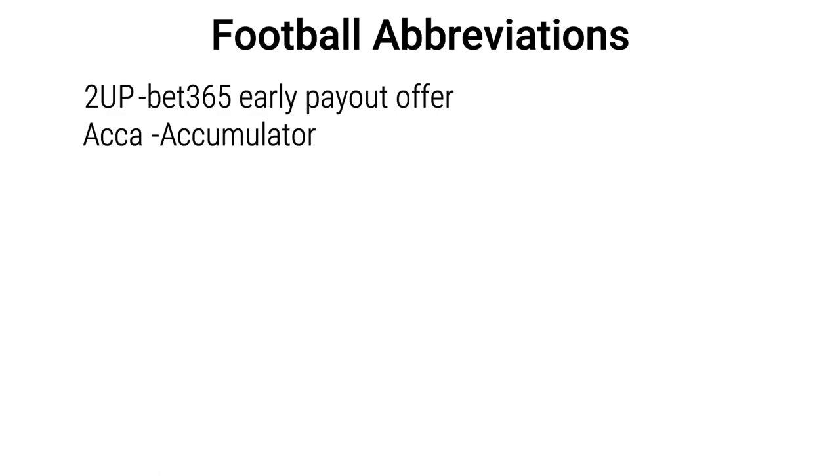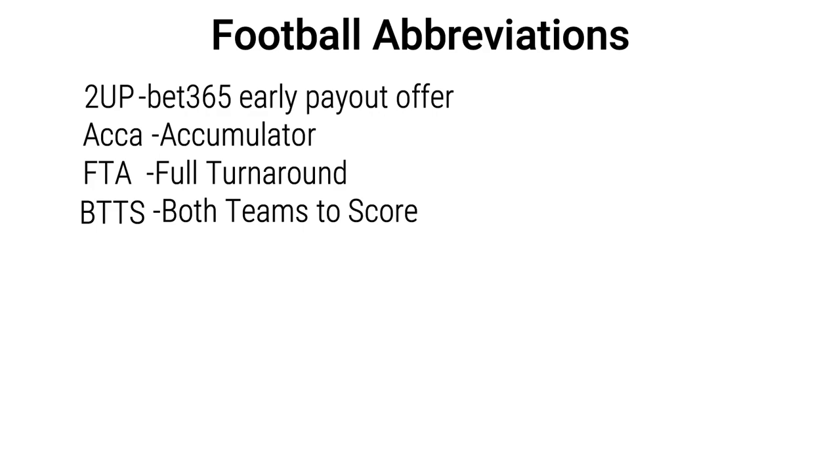Relating back to the 2UP offer, there's something called a full turnaround — FTA — where the match ends 2-2, meaning your team went two goals ahead and then the losing team came all the way back. This gives you the full profit of both the back bet and lay bet winning. There's also BTTS, which is a bet for both teams to score — you're betting yes or no that both teams will score.